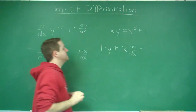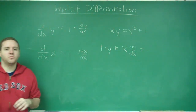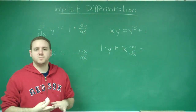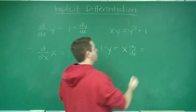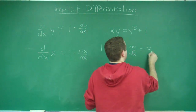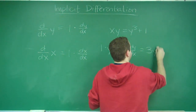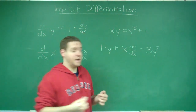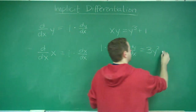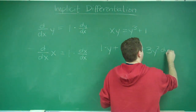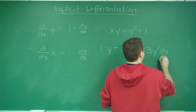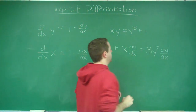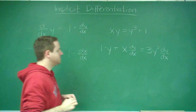On the right side of the equation, we have y cubed. y cubed, using power rule, gives 3y squared, but times the derivative of the inside, which is y — so you have to have a dy/dx. And the derivative of 1 is 0.